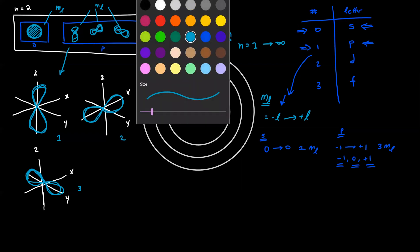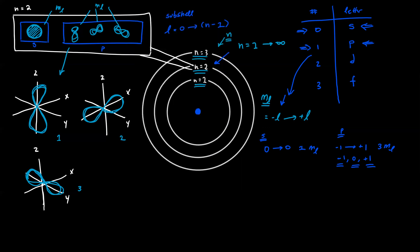Finally, we have the fourth quantum number, the spin quantum number, represented by ms. The spin quantum number tells you the direction of the electron spin within the orbital. Each orbital can hold two electrons. The value for ms can either be positive one-half or negative one-half — it can't be any other values.